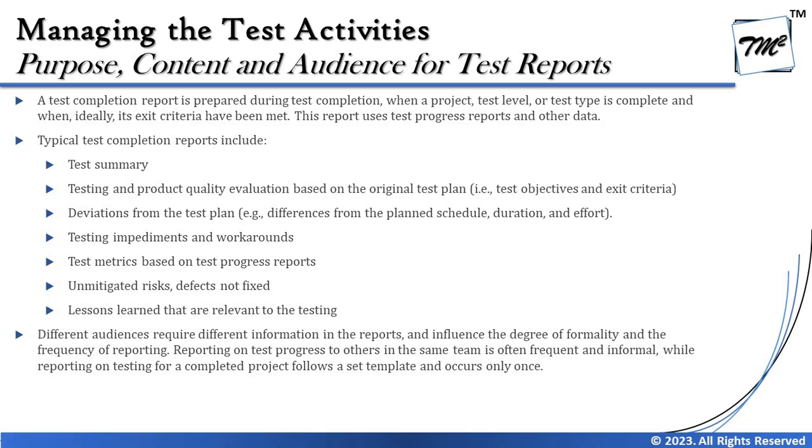The frequency of report creation is defined by your target audience. The level of formality — whether high-level, detailed, graphical, or tabular — is also driven by the expected stakeholders. Reporting test progress within the same team is often frequent and informal, while reporting for a completed project follows a set template and occurs only once. Test progress reports are created periodically, while the test completion report is more detailed and created only once at the end of the project.